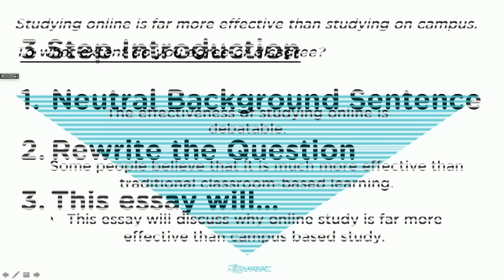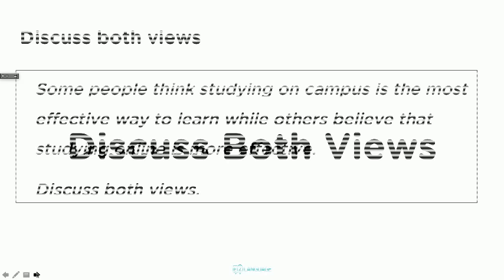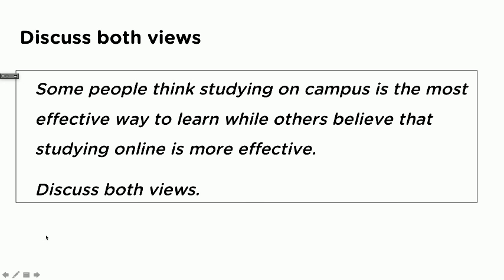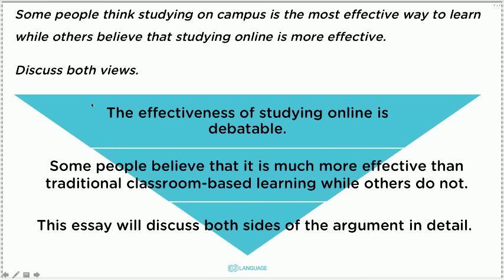Three-step introduction — neutral background sentence, rewrite the question, 'this essay will.' Let's apply it to discuss both views: 'Some people think studying on campus is the most effective way to learn, while others believe that studying online is more effective. Discuss both views.' A broad neutral background sentence: 'The effectiveness of studying online is debatable.' Rewrite the question: 'Some people believe that it is much more effective than traditional classroom-based learning, while others do not.' 'This essay will discuss both sides of the argument in detail.'